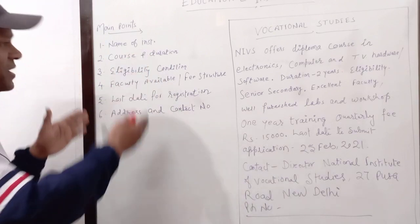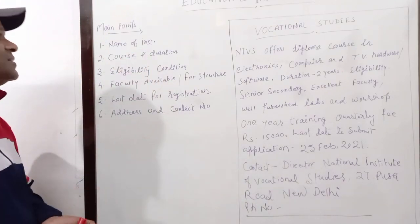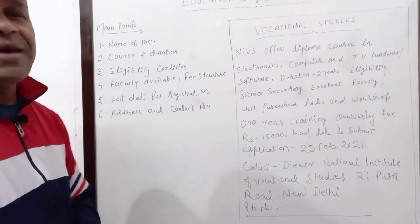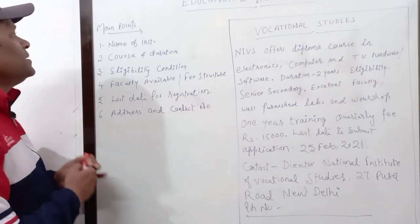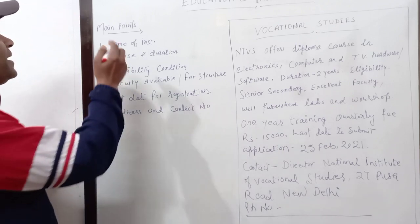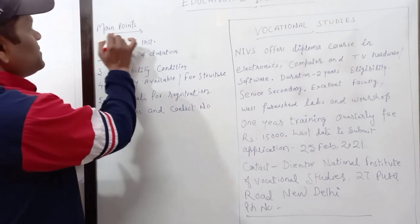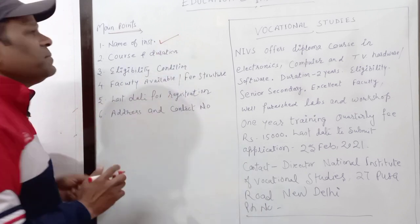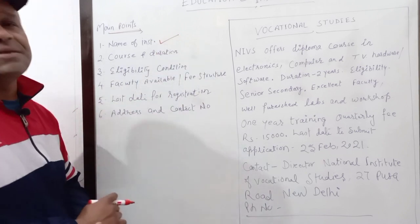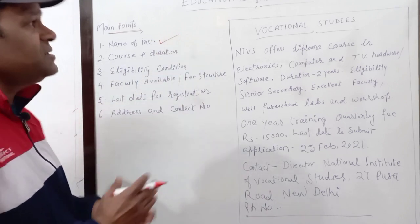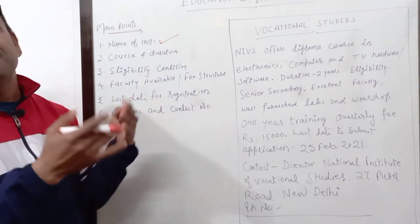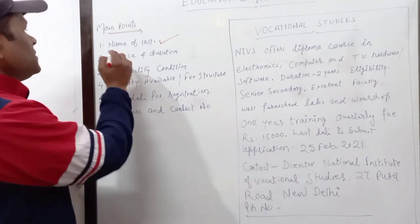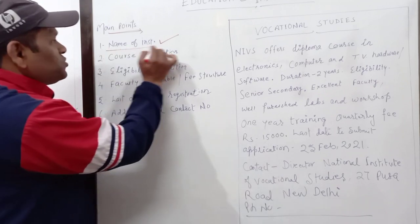So what are the main points? What are the certain keywords we have to keep in our mind? Let me highlight the main points. First of all, mention the name of the institution — the institution which is publishing the advertisement. The name has to be given.